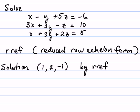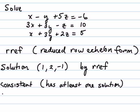We could plug in a one for x, a two for y, and a negative one for z. It would have to work in all three equations. We could say then that this system is consistent because it has at least one solution, and we can say it's independent because it has at most one solution.